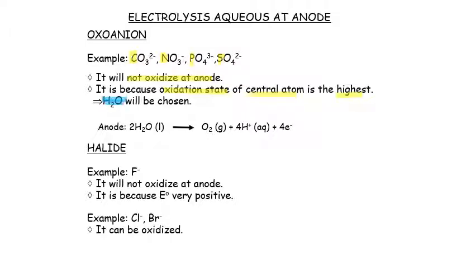When water is chosen at the anode, it forms O₂, 4H⁺ ions, and 4 electrons. For halide anions: fluoride will not be oxidized because its electrode potential is very positive, but chloride and bromide can be oxidized at the anode.